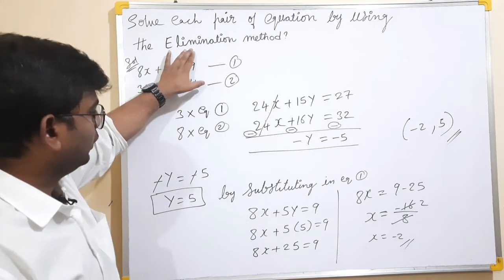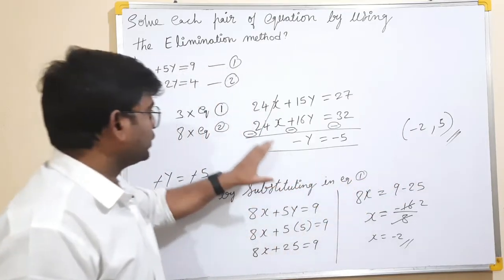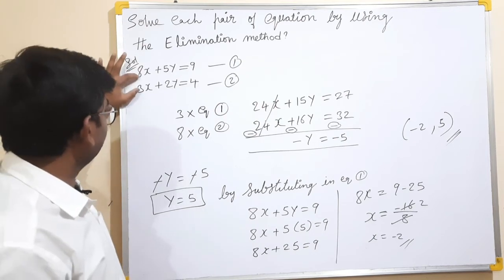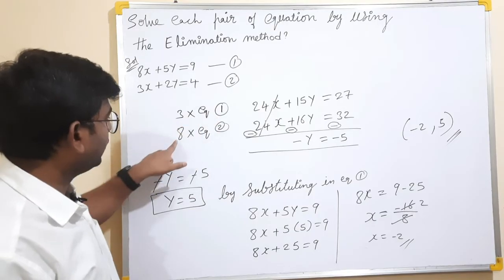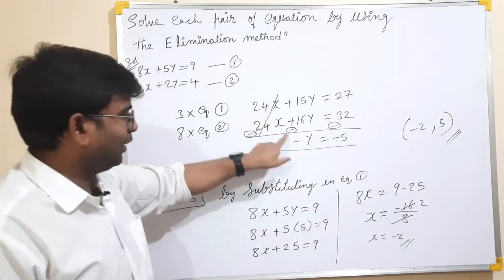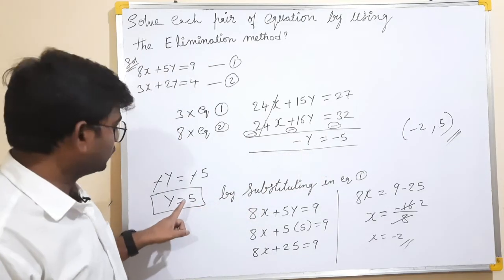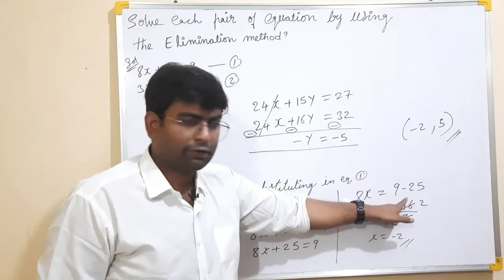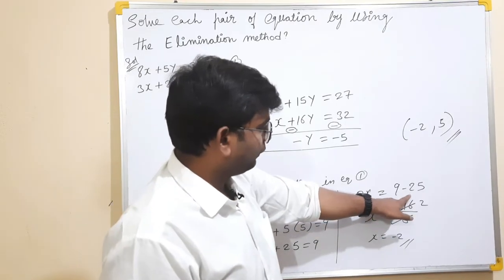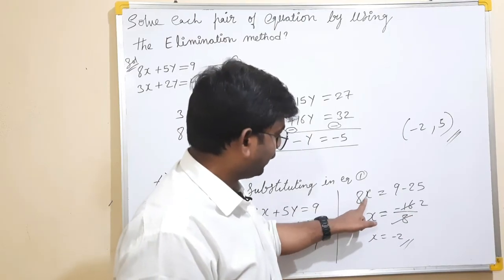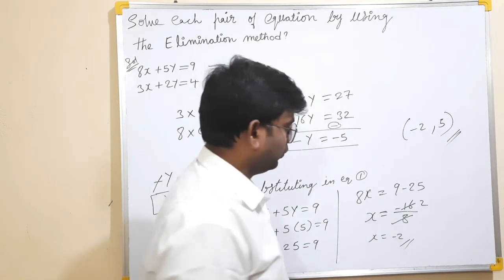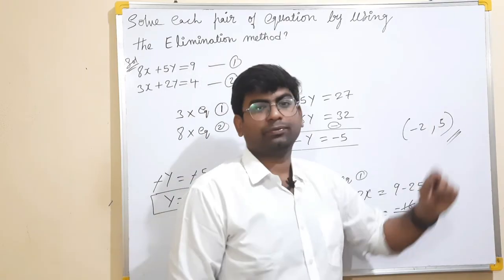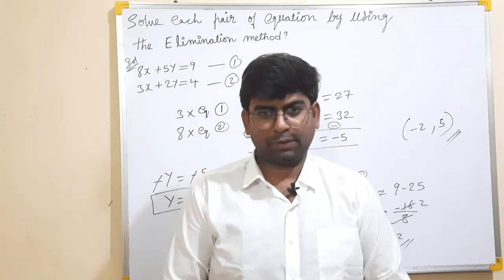So by the elimination method, we found x equals minus 2 and y equals 5. We checked the two equations to confirm: we multiply the x terms so they cancel — equation 1 multiplied by 3 and equation 2 multiplied by 8. The y value is 5 and substituting into the first equation gives x equals minus 2. If you like this video, please subscribe. Bye!